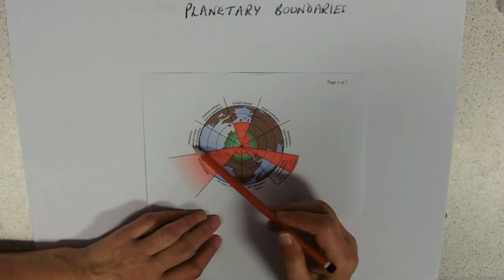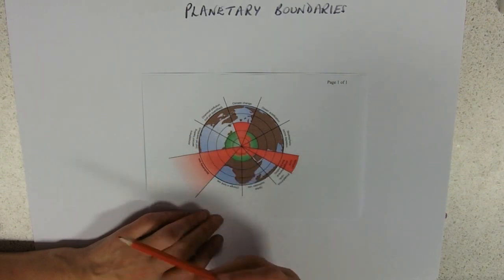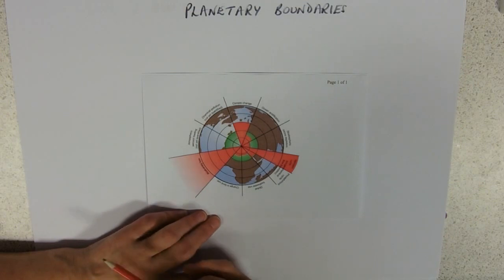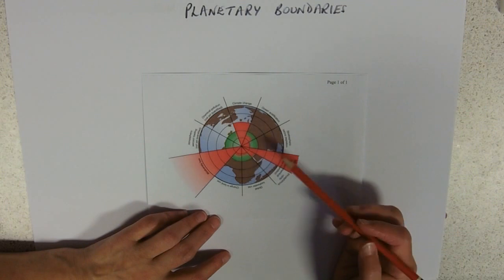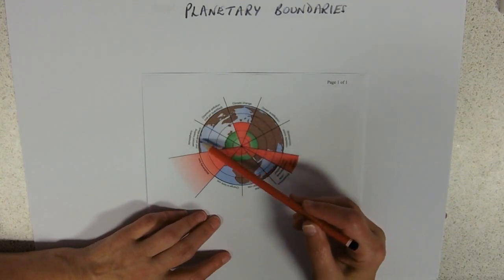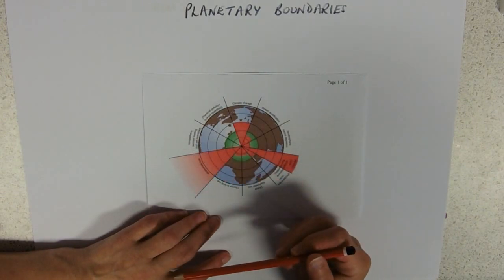The aerosol loading, again, that's particulate. And we're not sure what that will cause or where the boundary should be. So you might be talking about things like blocking out light with particles, things like smog. You might be talking about holes in the ozone layer there.